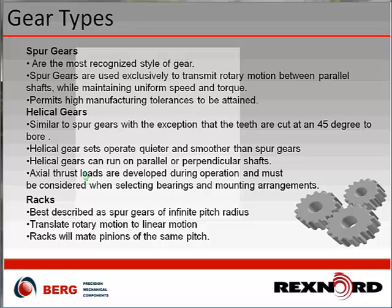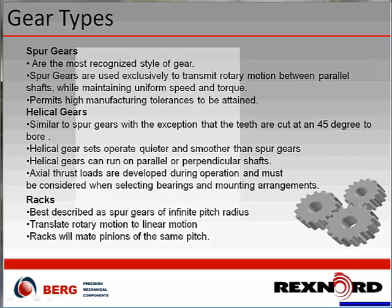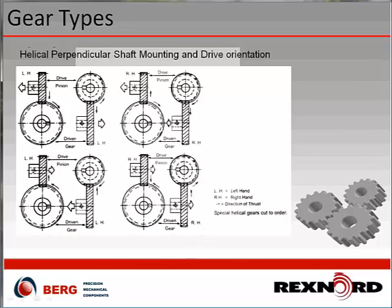Gear racks are best described as spur gears of infinite pitch radius — they transfer rotary motion into linear motion. Racks must mate with pinions of the same pitch; you cannot use a 16-pitch rack with a 24-pitch pinion. Helical gears also allow you to drive perpendicular shaft mountings in different drive orientations, giving different rotations, counter-rotations, and directions with different gear sets.